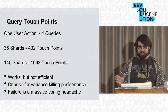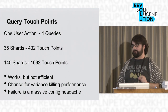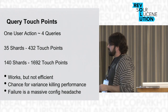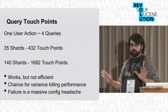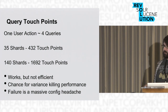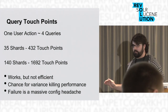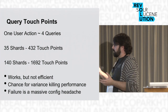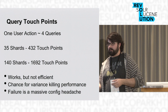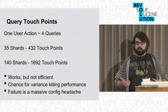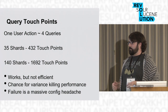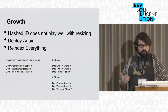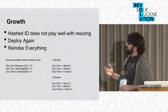One user action from our app amounts to about four queries going out to Solr. For 35 shards you're at about 432 touch points; for 140 shards you're up at 1,700 — which is crazy. Surprisingly it works, but it's not efficient. You really have that chance for variance at each touch point — a shard that's garbage collecting will slow things down. And in the Solr 1.4 days, if a master dropped out you had to reconfigure everything.